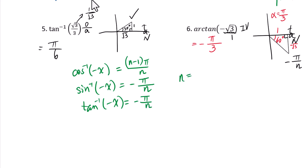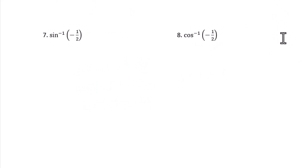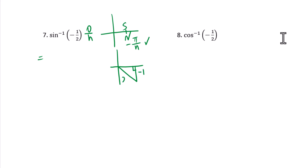Question 7: inverse sine of negative 1 over 2. Using the pi over n pattern, we need to find the reference angle first. Sine equals opposite over hypotenuse: negative 1 over 2, so the angle is 30 degrees, meaning the reference angle is pi over 6. Therefore, in the fourth quadrant, the answer is negative pi over 6.